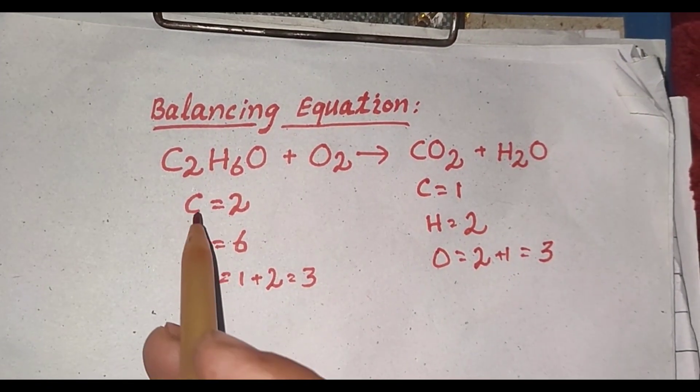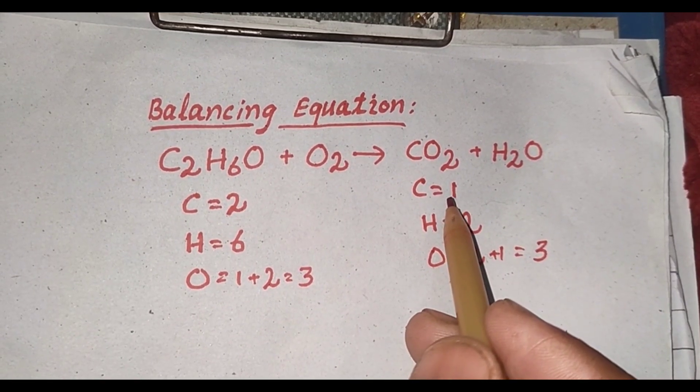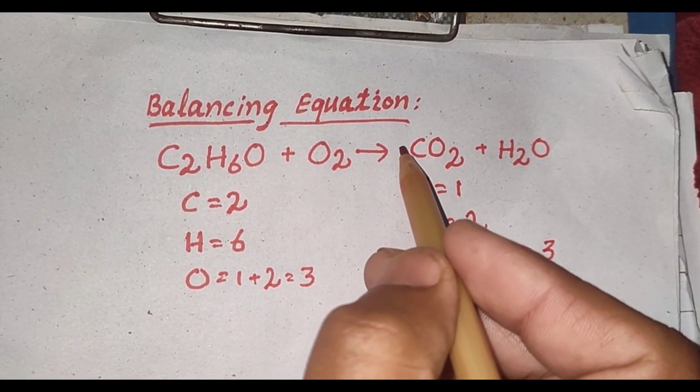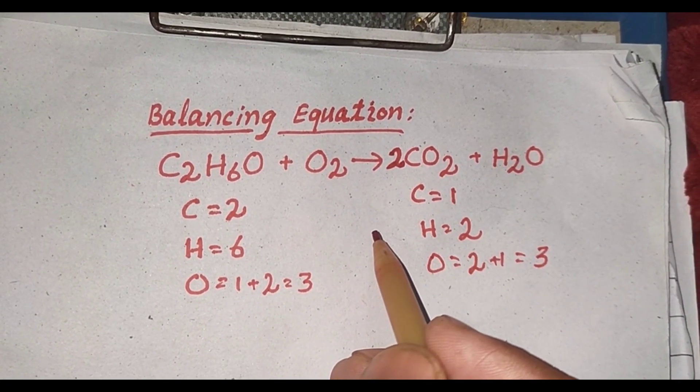To balance the number of carbon atoms, there are 2 carbons on the left and 1 carbon on the right. If we multiply by 2, the carbon in carbon dioxide also becomes 2.